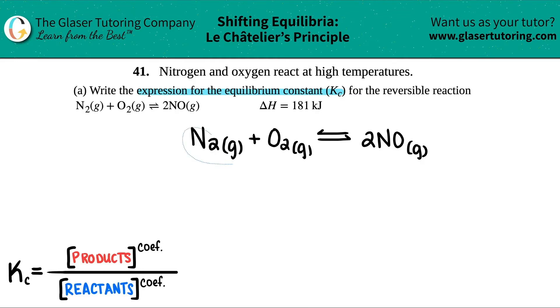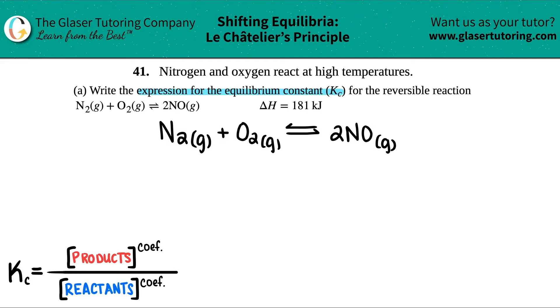So we just have to basically write the expression for Kc, which is this equation down here. We've seen it a lot already if you guys have been on the playlist. Kc is just the concentration of products divided by the concentration of reactants. And you just got to raise both of them to their coefficients.